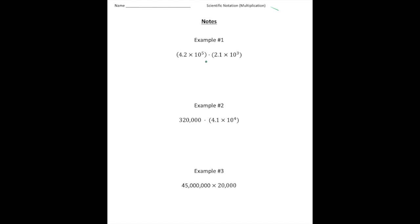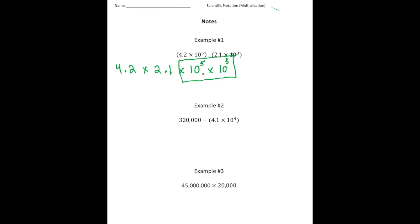Here we have 4.2 times 10 to the fifth times 2.1 times 10 to the third. What you can do is rearrange these numbers because all we're doing is multiplying. So I'm going to use the commutative property to rewrite this as 4.2 times 2.1 times 10 to the fifth times 10 to the third. Now I'm going to multiply 10 to the fifth times 10 to the third, and because we have like bases, we add the exponents, so that's going to be 10 to the eighth.